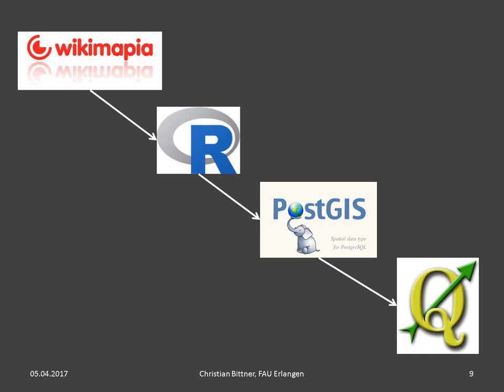The software stack I used: Wikimapia has an API that passes data in XML format. I wrote an R script to download and clean this data, passed it into a PostGIS database, and finally used QGIS for visualization.